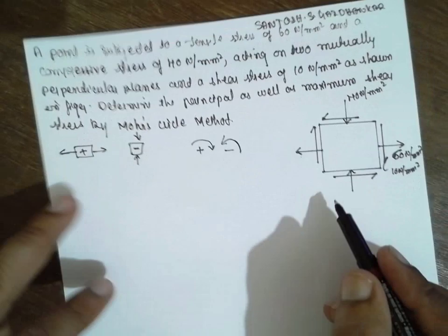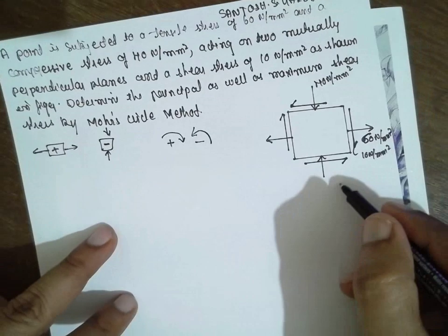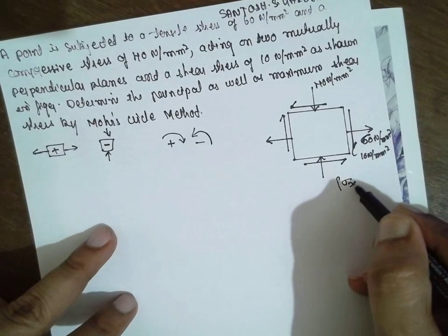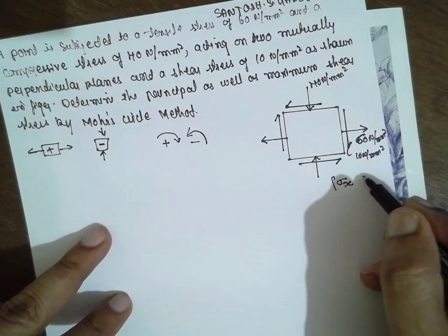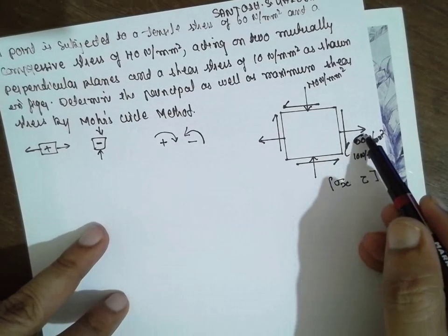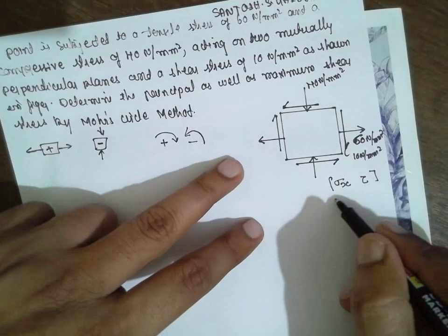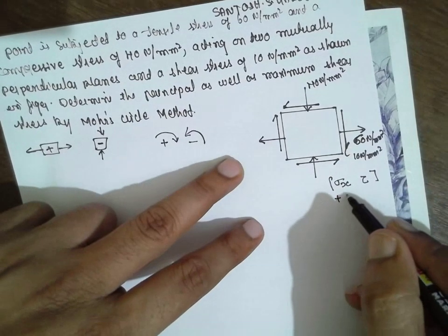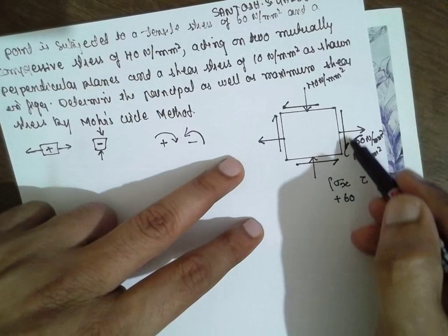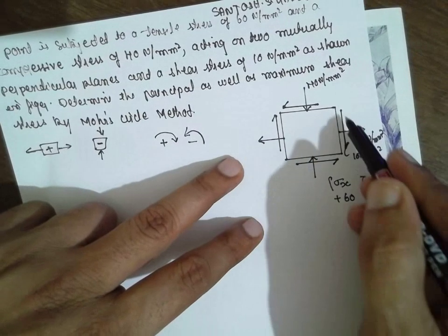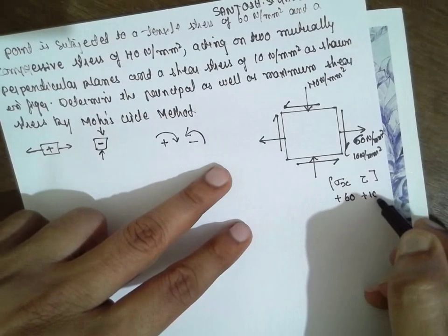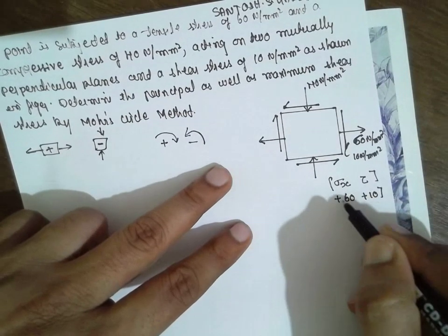Now first I will write sigma x and tau. Sigma x — this is tensile tension, therefore plus 60. Tau — it is rotating in clockwise direction, therefore it is plus 10. Completed.